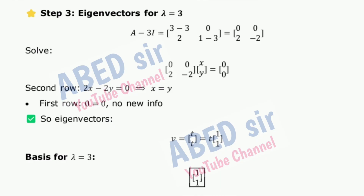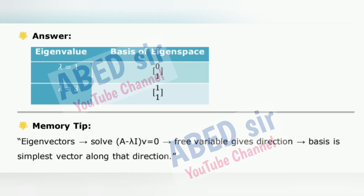Step 3 — Eigenvectors for λ = 3: compute A − 3·I. Second row gives −2x + 2y = 0, so x = y. First row gives 0 = 0 — no new information. So eigenvectors v form the basis for λ = 3. Answer: eigenvalue λ = 1 and λ = 3 each have their respective bases for their eigenspaces. Memory tip: Eigenvectors — solve (A − λI)v = 0. Free variable gives direction; basis is simplest vector along that direction.